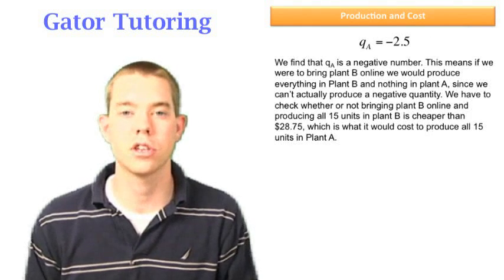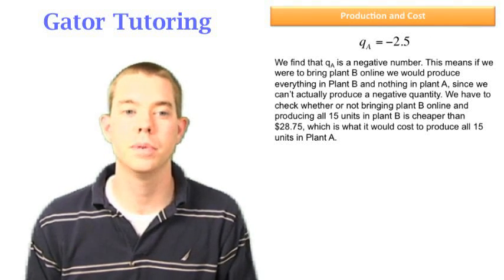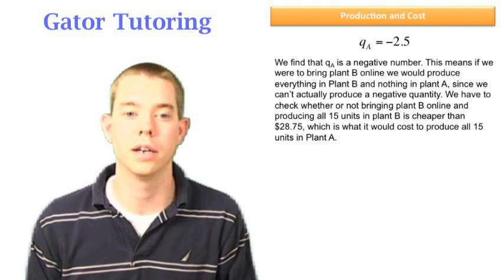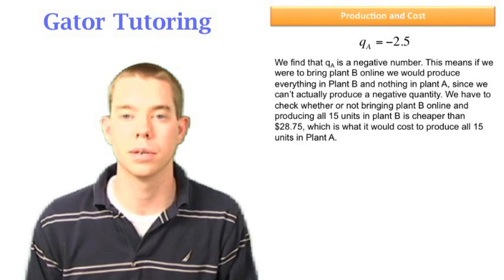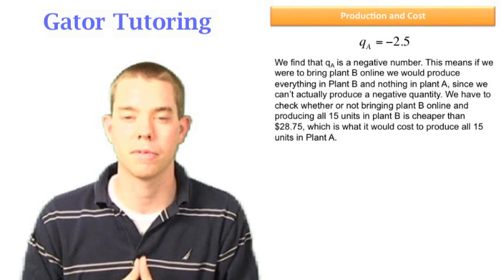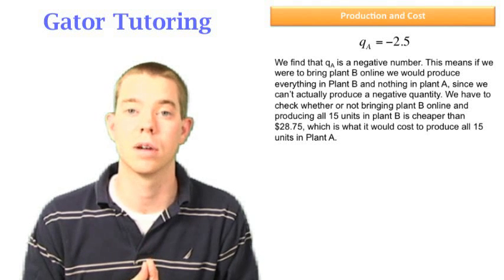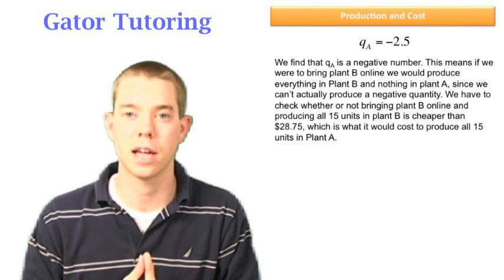We find that QA is a negative number. This means if we were to bring plant B online, we would produce everything in plant B and nothing in plant A. This is going to happen from time to time. You may see you get a negative number or zero, and that's no accident.